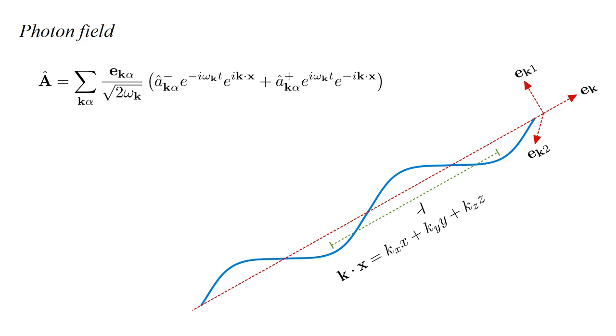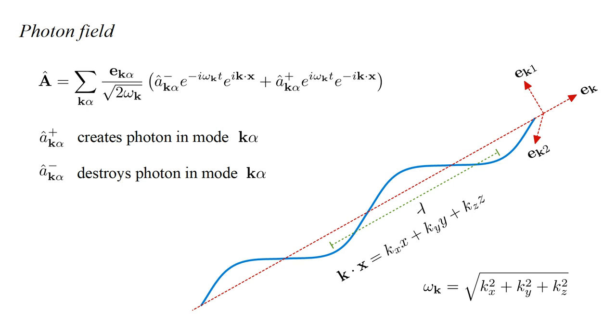Spatial dependence is through factors e to the plus or minus i k dot x. This varies periodically along the E_k direction, where the spatial period lambda is the wavelength of the radiation mode. The frequency omega_k equals the magnitude of the k vector. The operators A-hat k alpha plus or minus create or destroy a photon in the mode k alpha. The field operator A-hat contains creation and destruction operators for all possible photons.